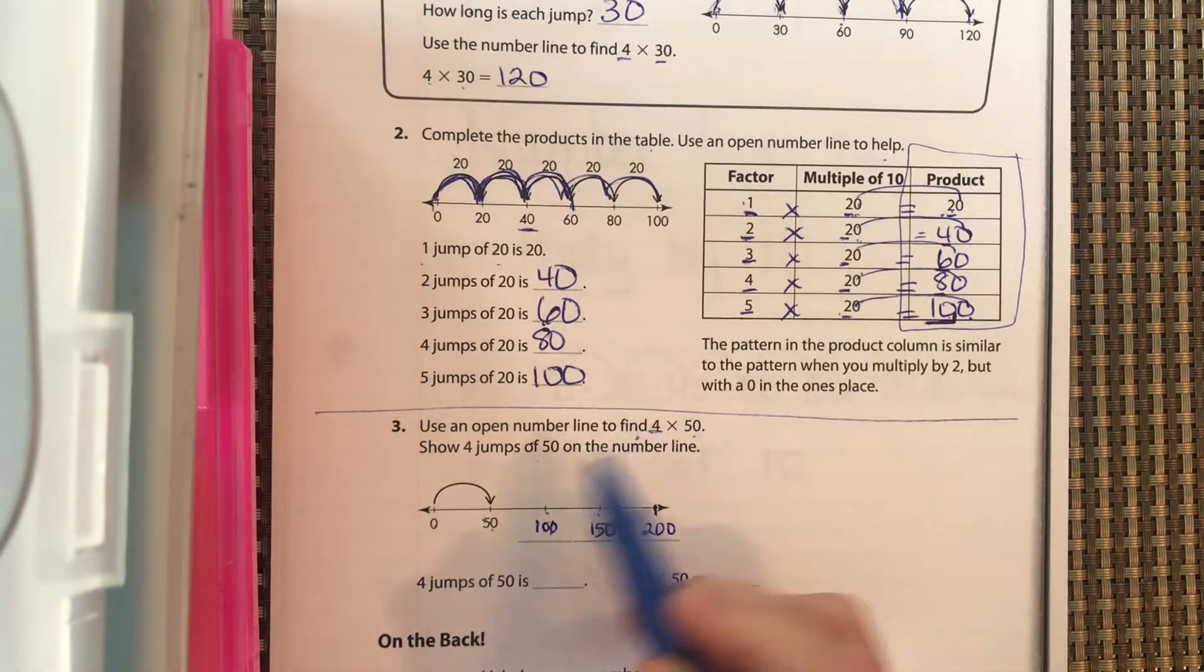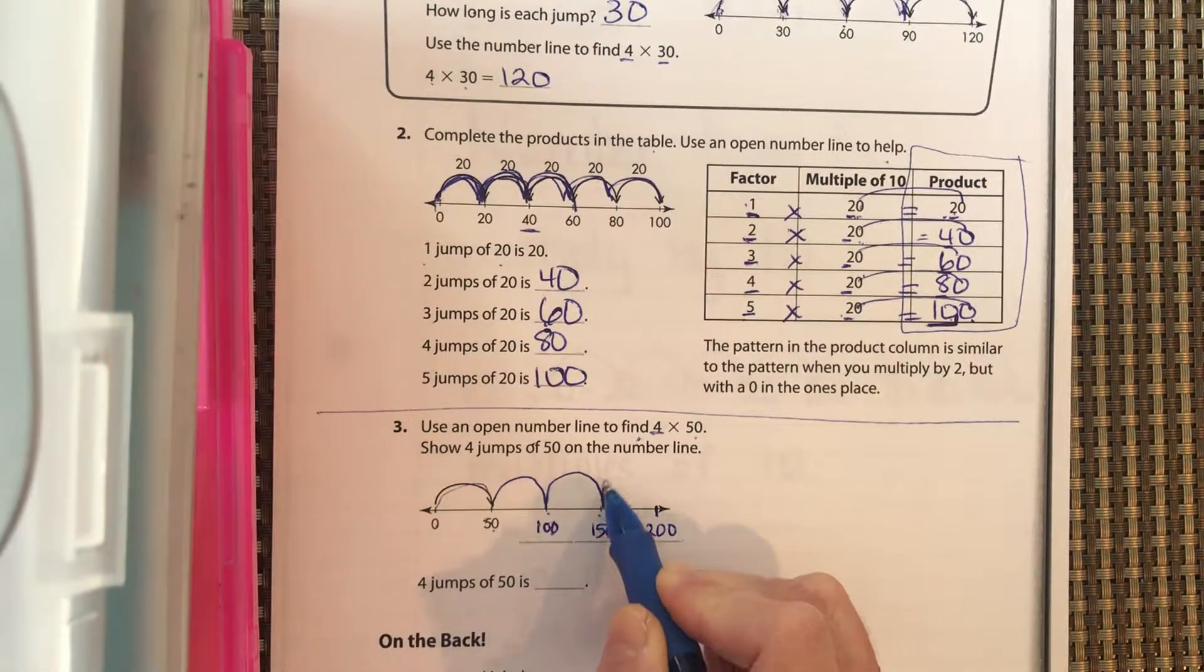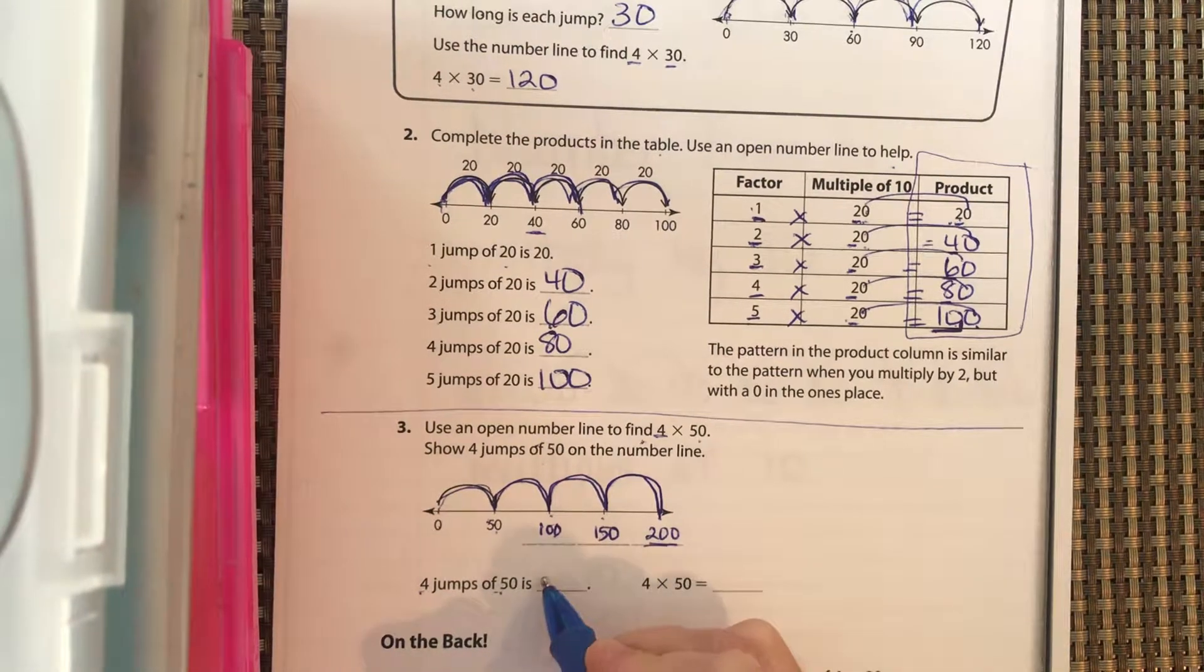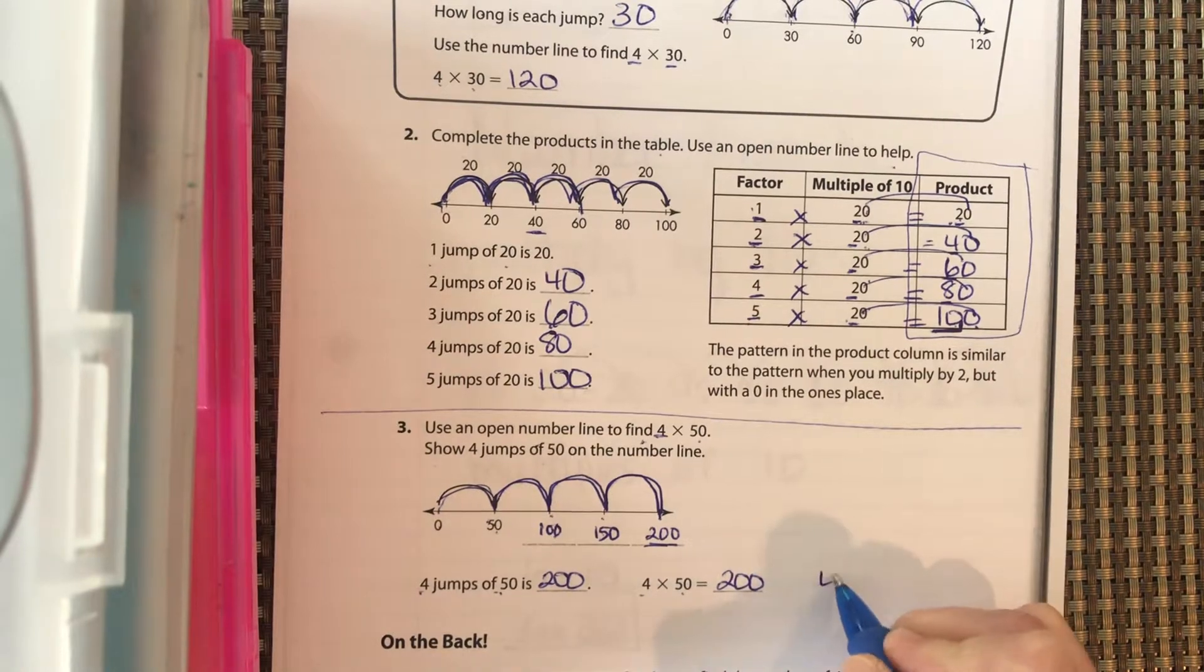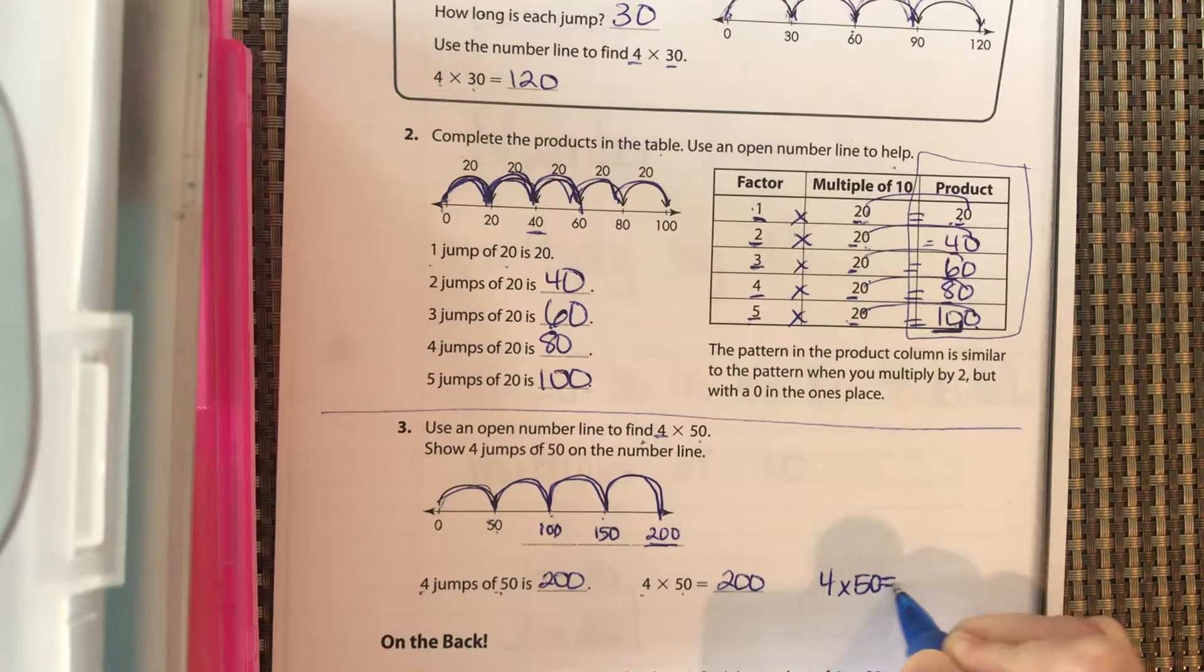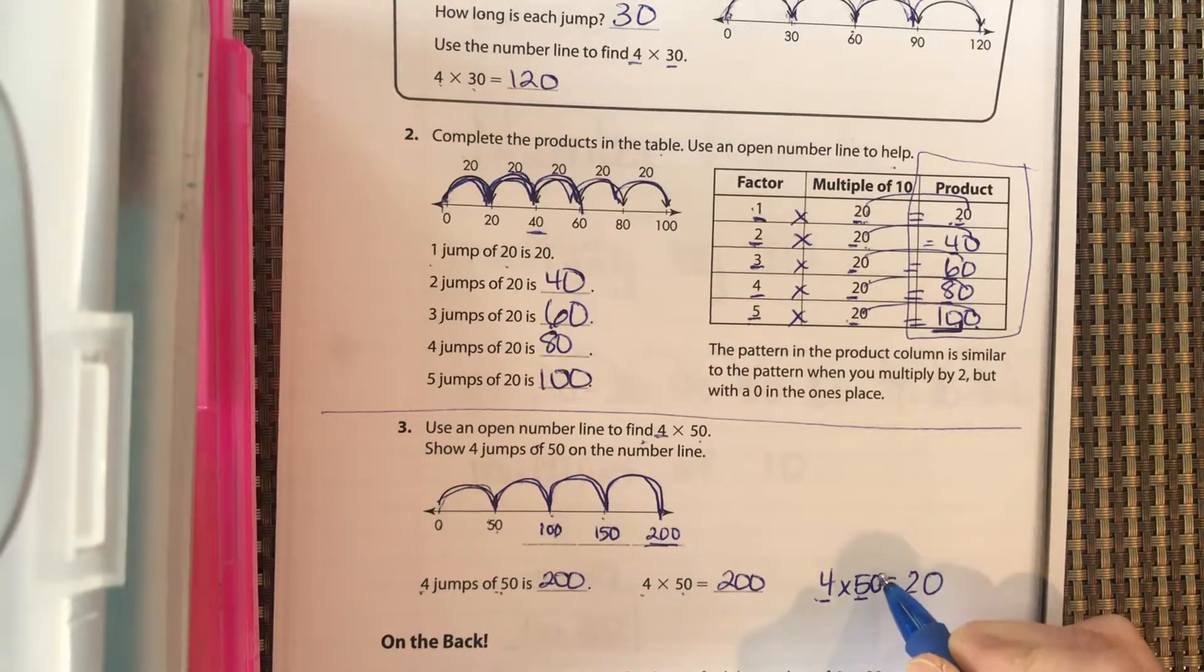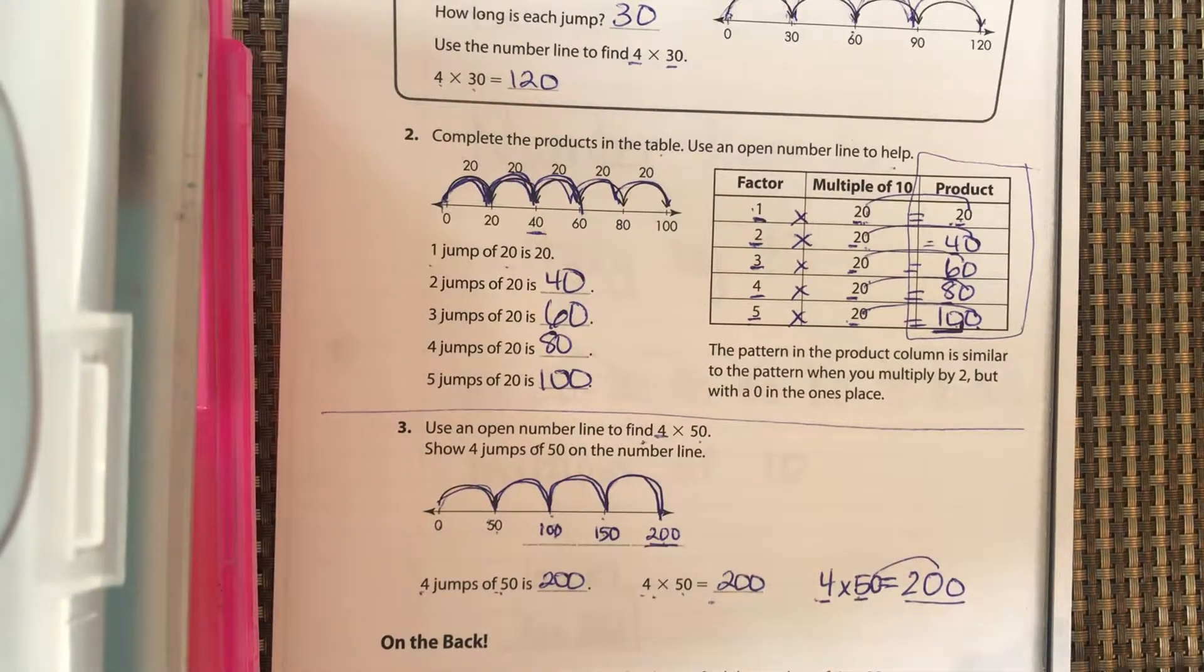So now we want to jump 4 times. So we have 50, 100, 150, 200. So 1, 2, 3, 4. So 4 jumps of 50 is 200. Therefore, 4 times 50 is 200. And if you look at it this way, 4 times 5 is what? Write it down right here. 4 times 5 is 20. And bring your 0 over. 200, which is what we got. 4 times 50 is 200.